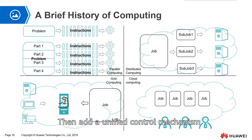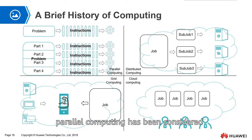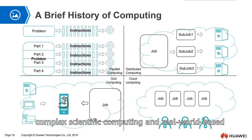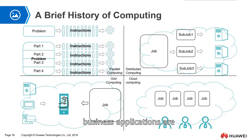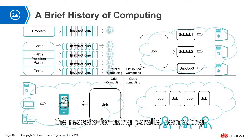Then, a unified control mechanism is added to control the entire process. Historically, parallel computing has been considered high-end computing. For modeling complex scientific computing and real-world engineering problems, business applications are the driving force behind rapid computer development, requiring complex methods to process large amounts of data. Therefore, the reasons for using parallel computing are as follows.